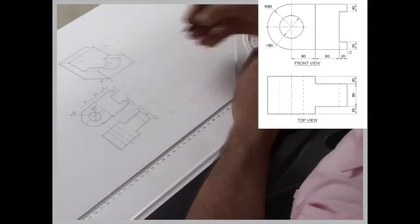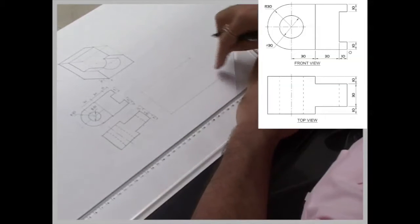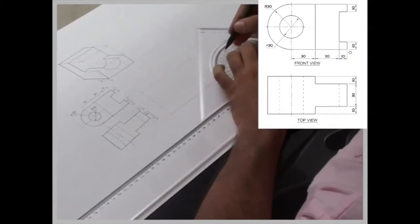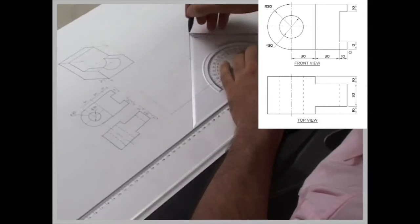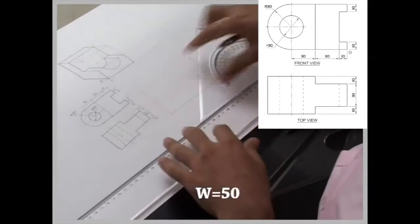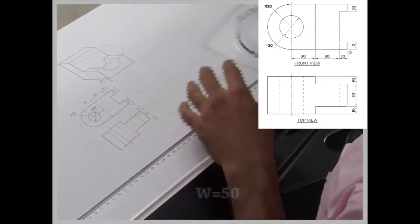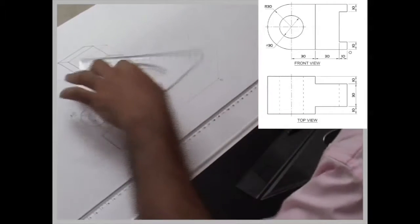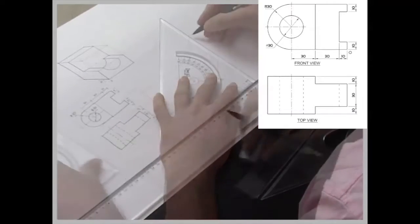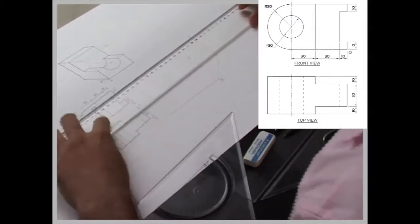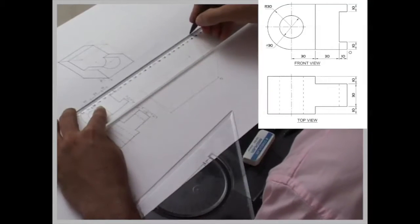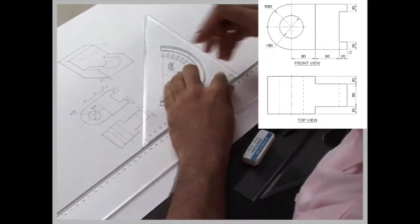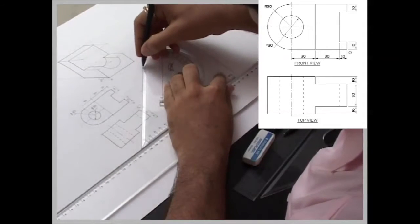Now see, O is on this side. So we will take 45 degrees now on this side. How much is this with 50? Then we will draw a line from here, and a line from here.